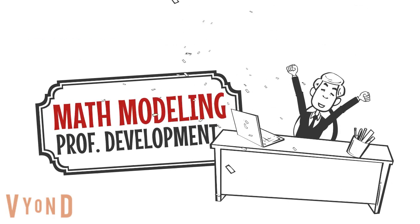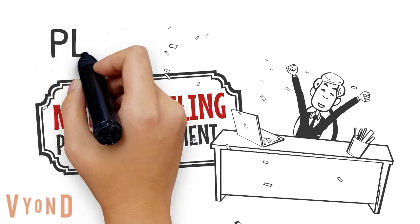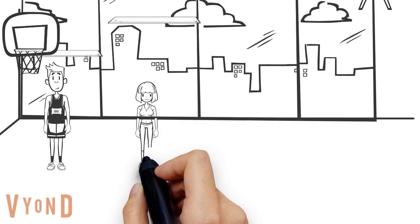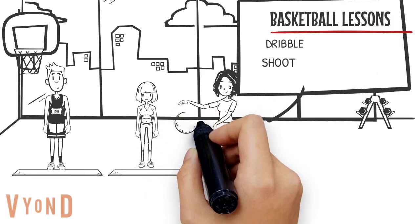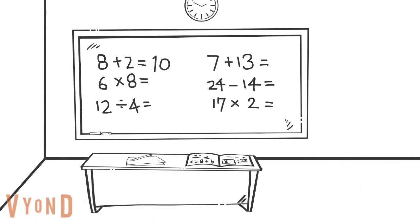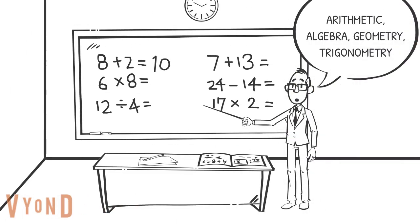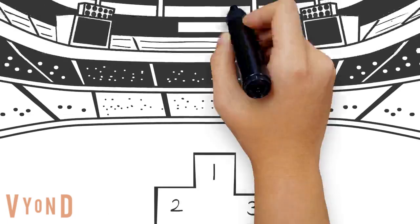It's not enough to teach a basketball player dribbling, running, and shooting. They need to play the game. And it's not enough to teach our students arithmetic, algebra, geometry, trigonometry. They too need to play the game.